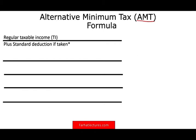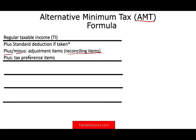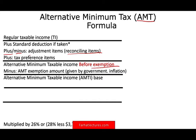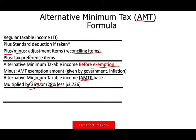Then you add back your standard deduction if you took it. Then you have certain adjustments — reconciling items — sometimes pluses, sometimes minuses. Then you add something called preferences. That gives us alternative minimum taxable income before exemption. The government then gives you an exemption, which is subject to inflation and changes year to year. From that, we compute alternative minimum taxable income base. We multiply it by either 26% or 28%, depending on the amount of your AMTI.